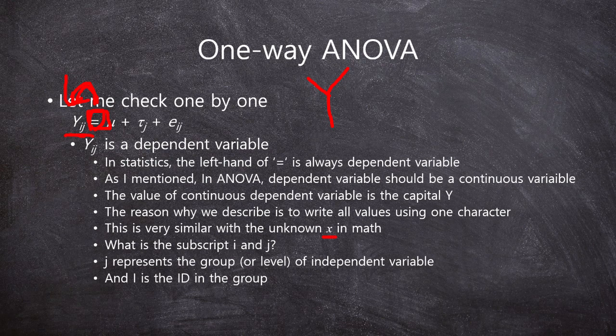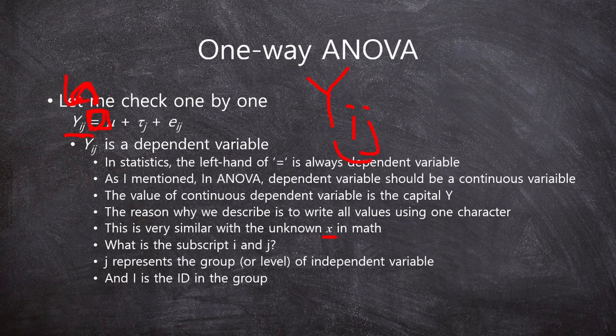This is very similar with the unknown X in math. So, here, what is the y_ij? What is this?